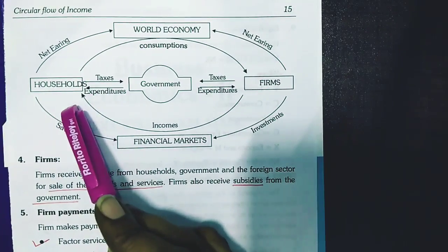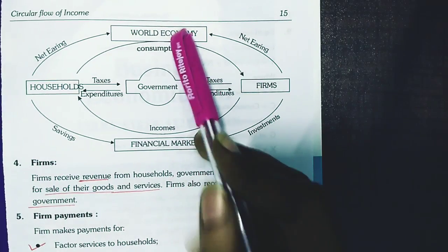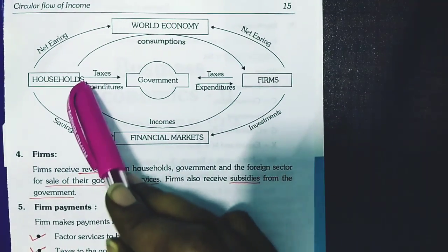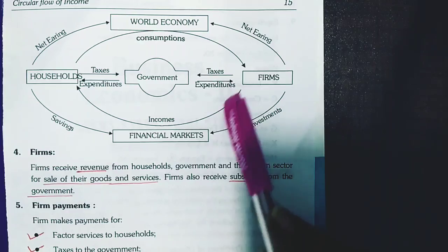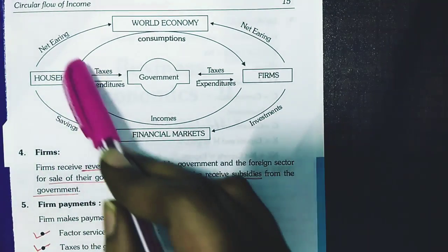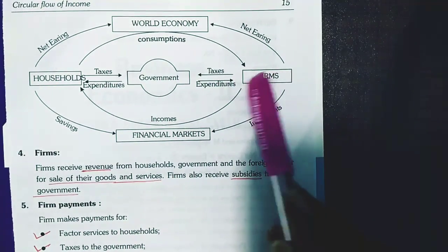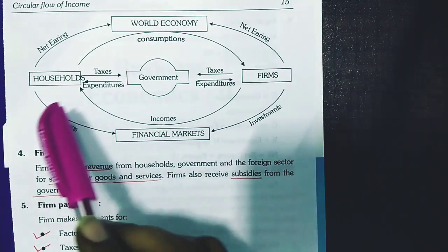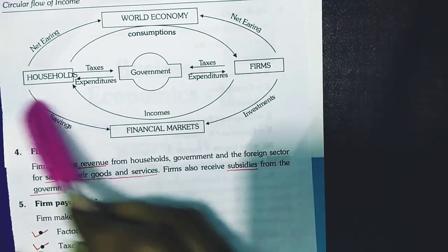To recap: the four economic sectors are household, firm, government, and foreign sector. Households provide services to firms and receive income in return. Households have three types of spending: purchasing goods and services from firms, paying taxes to the government, and spending on imports.